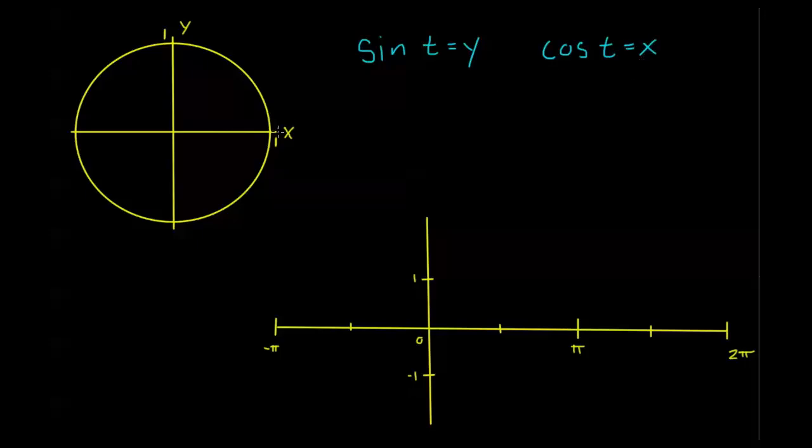And remember what this meant is if we have some real number t and we start here from our initial position and we travel around our unit circle a distance of t, we end at a point p(x,y) which is called our terminal point. This is where t terminates.